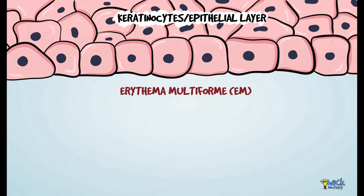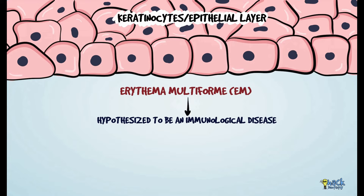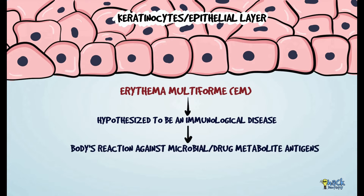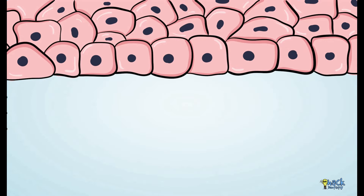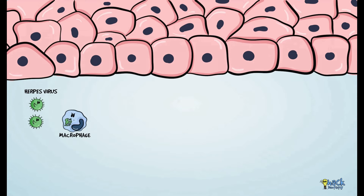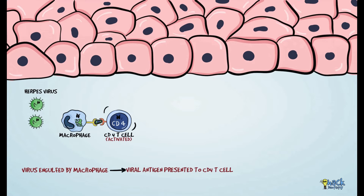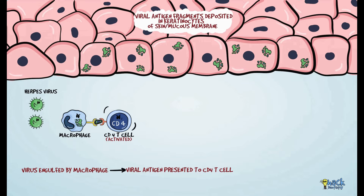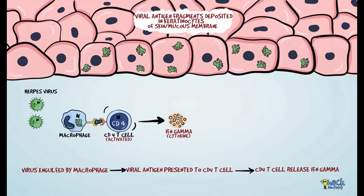Erythema multiforme is hypothesized to be an immunological disease where tissue damage results from the body's reaction against microbial antigens or antigens from drug metabolites. In herpes-associated erythema multiforme, herpes viral DNA is engulfed by macrophages and presented to CD4 T-cells, activating them. Fragments of viral DNA antigens are also deposited in the keratinocytes of the skin and mucous membranes. Activated T-cells release interferon gamma, a pro-inflammatory cytokine.